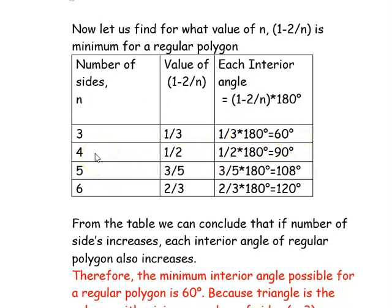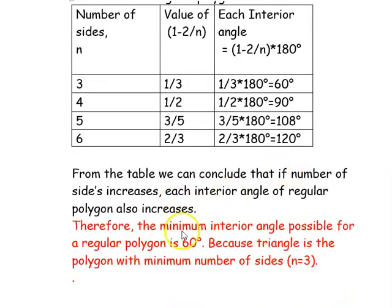From the table, we can conclude that as the number of sides increases, each interior angle also increases. Therefore, the minimum interior angle is for the number of sides equal to 3. Thus, the minimum interior angle possible for a regular polygon is 60 degrees, because a triangle is the polygon with the minimum number of sides, which is 3.